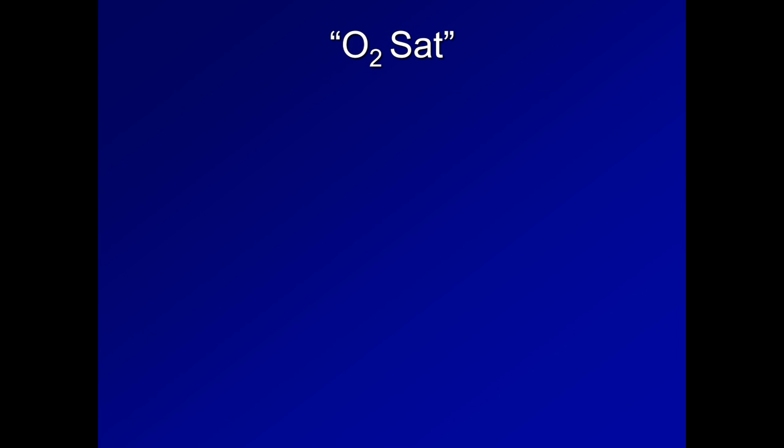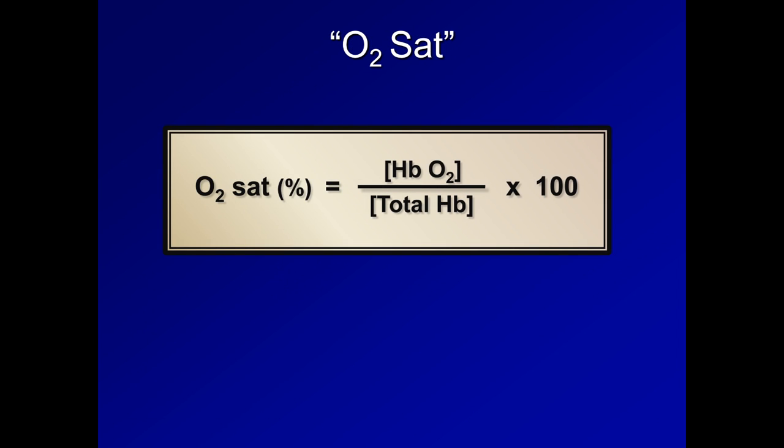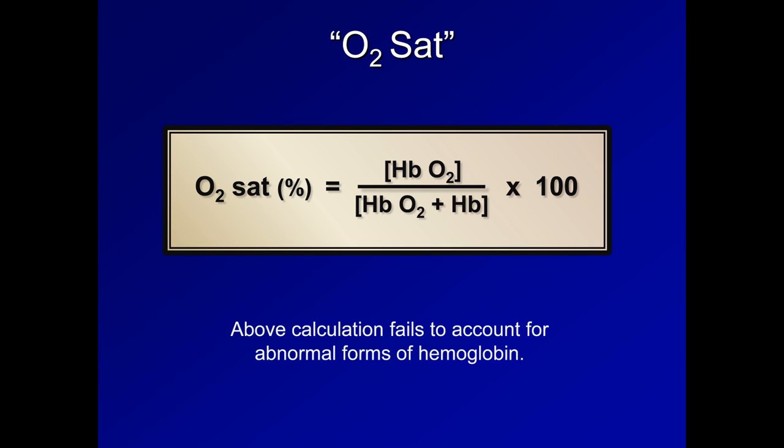Here is the equation commonly used to calculate oxygen saturation. It is the concentration of oxyhemoglobin divided by the total concentration of all hemoglobin, expressed as a percentage. Unfortunately, that denominator is often estimated as the sum of oxyhemoglobin and deoxyhemoglobin. Although this initially seems to be a logical substitution, it is based on the false assumption that oxyhemoglobin and deoxyhemoglobin are the only significant forms of hemoglobin.